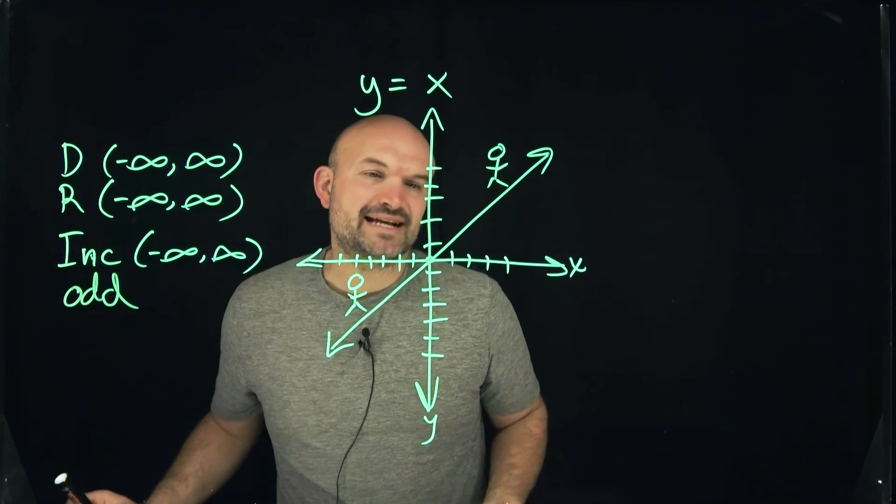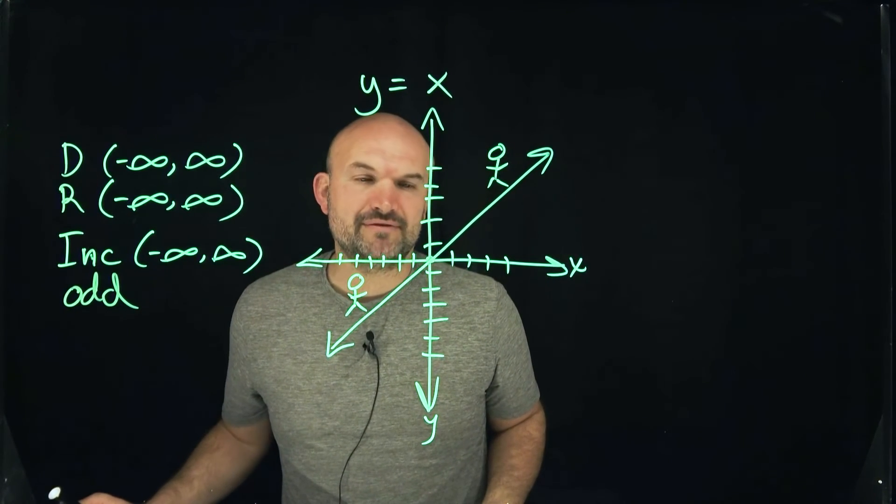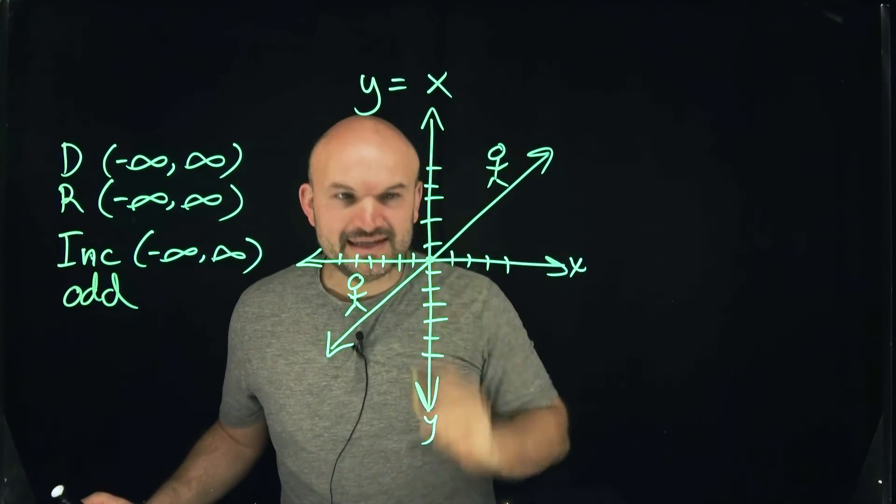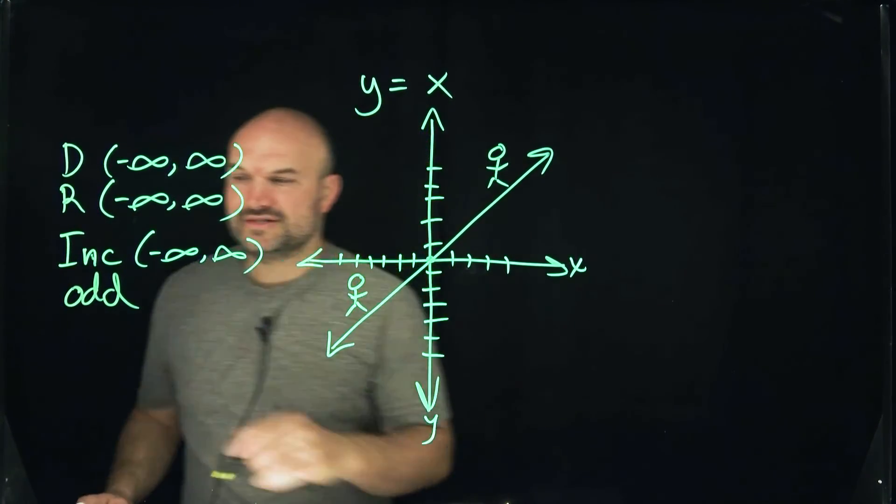The last thing we're going to want to do is just identify the intercepts. We're looking at this graph and we want to say, where are the x and y intercepts? This graph is pretty easy. We can see that the x-intercept is at zero and the y-intercept is at zero.